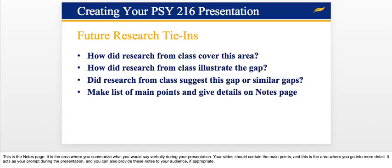In the future research tie-in section, you're going to explain how research from the class — the five articles that you reviewed — covers this area that's missing, and how those articles illustrate the gap. Include a couple of bullet points here and explain further in the notes. Once again, the notes would be used if you were presenting to a wider audience — you would refer to those and the viewers would not see them.